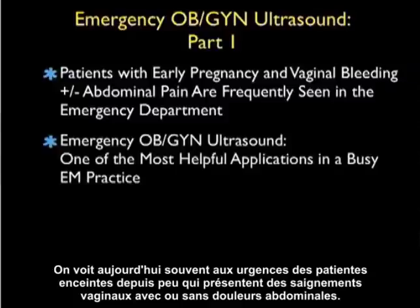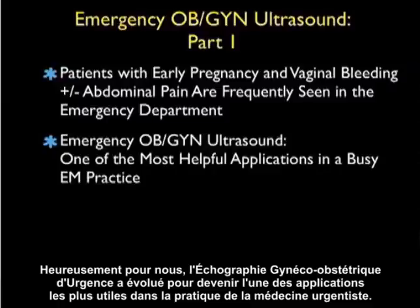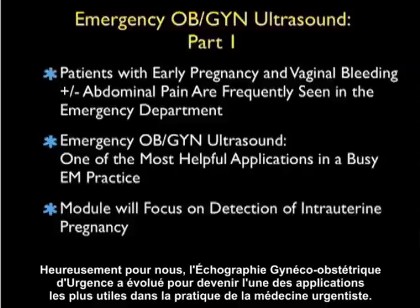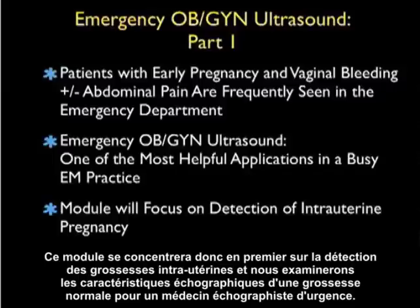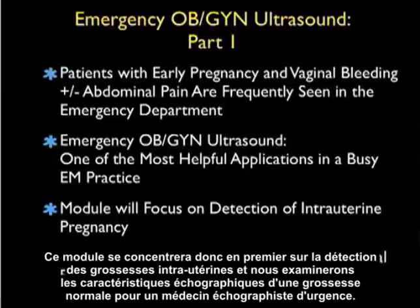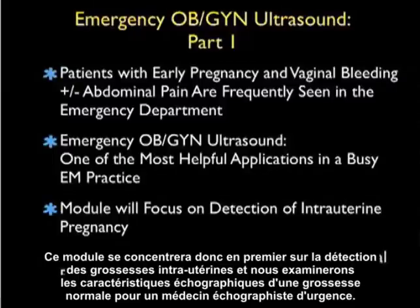Patients with early pregnancy and vaginal bleeding with or without abdominal pain are frequently seen in the emergency department. Luckily for us, emergency OBGYN ultrasound has evolved to be one of the most helpful applications of sonography in a busy emergency medicine practice. This module will focus primarily on the detection of intrauterine pregnancy and we'll examine the ultrasound findings that define a normal pregnancy for an emergency physician sonographer.